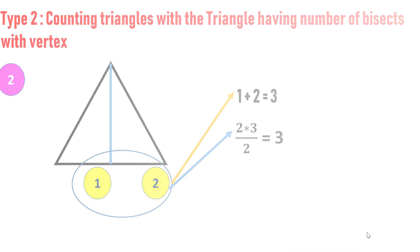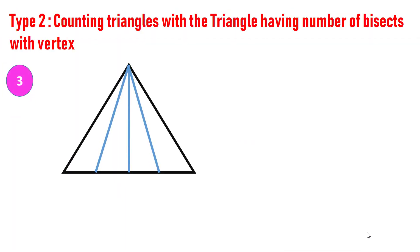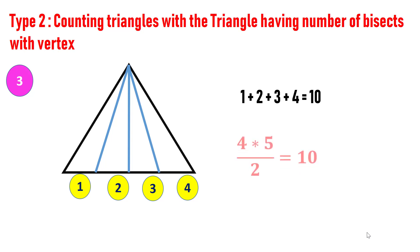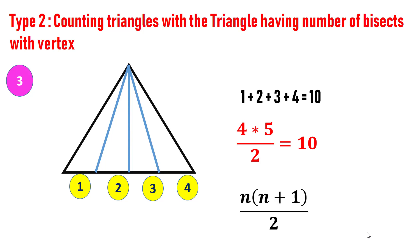Let's consider one more figure. Number all the parts, then add the numbers. Hence, number of triangles is one plus two plus three plus four, which equals 10. Using the second trick: number of parts is four, multiply by five, which yields 20, then divide by two, which yields 10. Both procedures yield the same result. The second trick is essentially the sum of all natural numbers formula: n into n plus one divided by two.